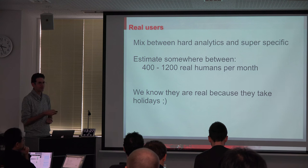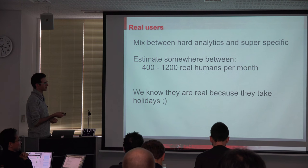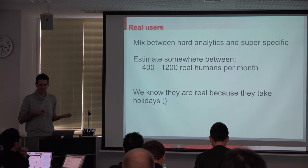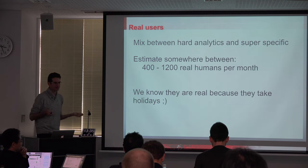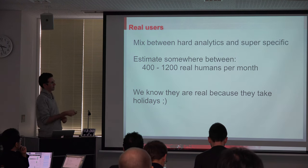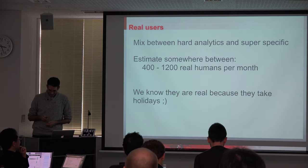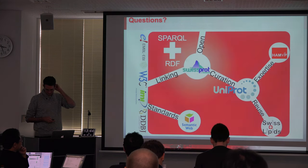In August and December we see a nice drop in usage, and that basically means the statistics are a bit valid. If your user statistics say everybody's using it all the time, they're lying — that means you have too many robots.